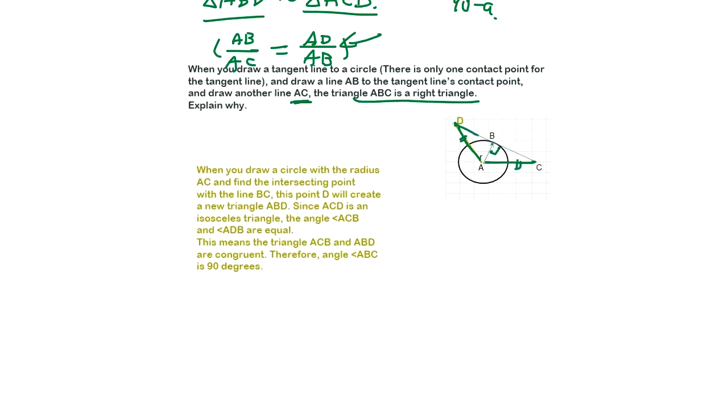When you draw the AC, you draw the same length D. Then it's isosceles, right? So this angle is same. And it's symmetric. You can spin. It's symmetric. So it's 90 degrees here. So that's the end of example proof problems in geometry.